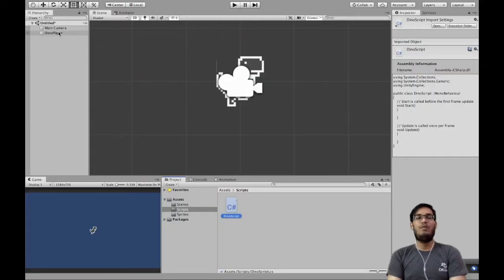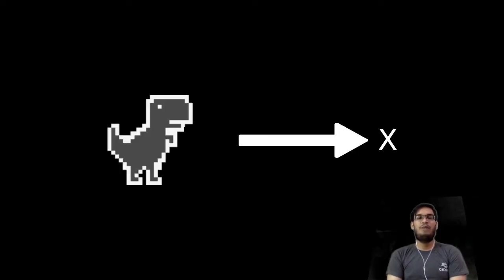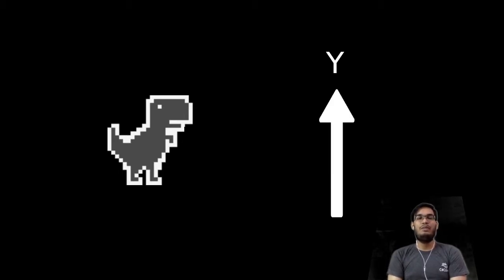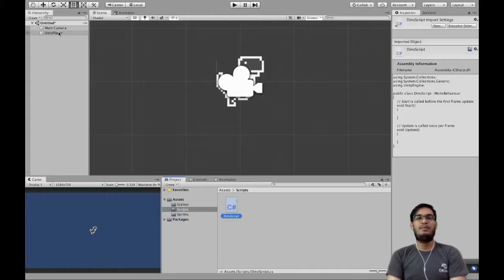Let me give a brief of what we want to achieve. We want our dinosaur to keep moving in the x direction continuously, and to jump in the y direction whenever somebody hits the left mouse button or touches the screen. We are going to achieve this by adding velocity in the x direction continuously and y direction occasionally.